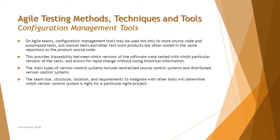The main types of version control systems include centralized source control systems and distributed version control systems. There are many in-house and commercial tools available, offering check-in and check-out options. The team size, structure, location, and requirements to integrate with other tools will determine which version control system is right for your particular agile project.